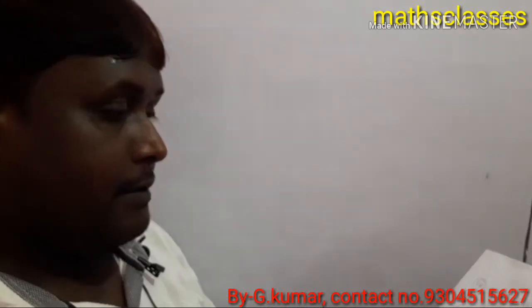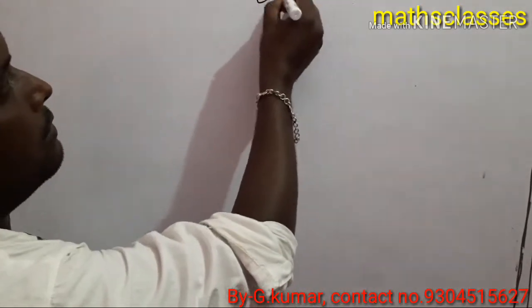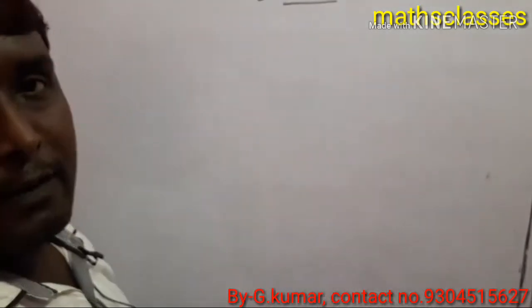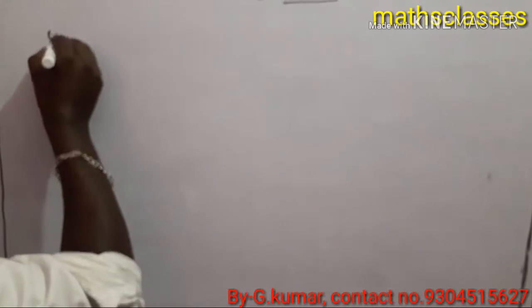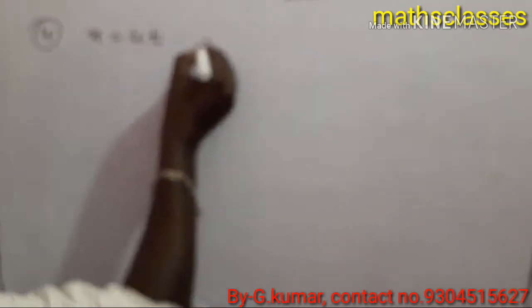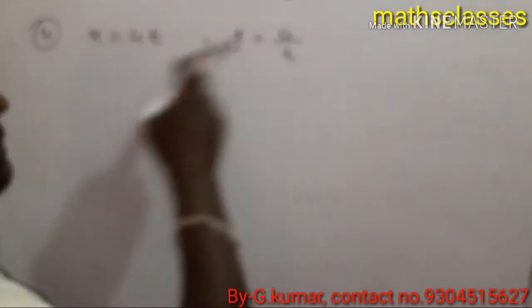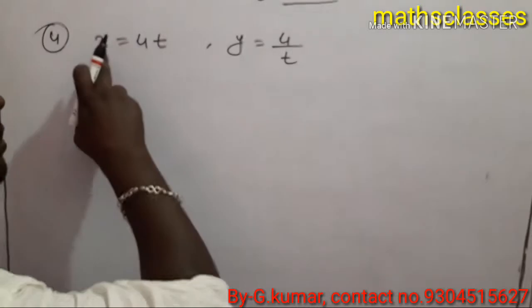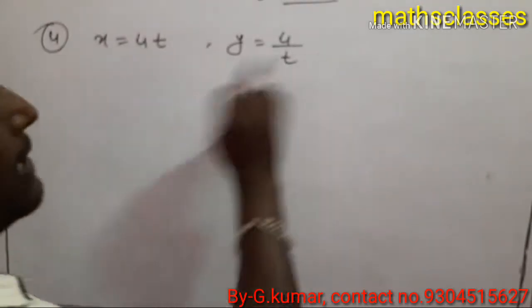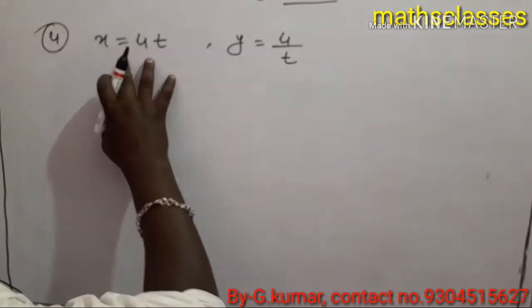NCRT class 12 exercise 5.6, question number 4. Given x equal to 4T and y equal to 4 upon T. We will solve this. This is a parametric function — a parametric function means one that has more than two variables.